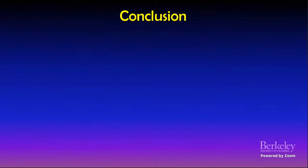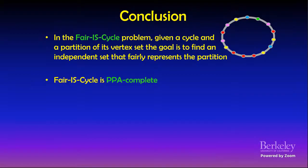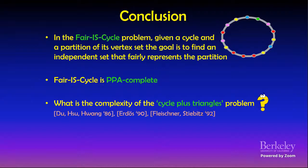We introduce the fair independent set in cycle problem: given a cycle and a partition of its vertex set, find an independent set that fairly represents the partition. We show this problem is PPA-complete. We also consider the fair splitting cycle problem: find two disjoint independent sets that fairly represent the partition and together cover all vertices but one from each V_i. We consider an approximate version with parameter epsilon where the two independent sets must cover at least half minus epsilon fraction of every part. For epsilon equal to zero the problem is PPA-complete, and even for some positive constant epsilon the problem is PPA-hard.